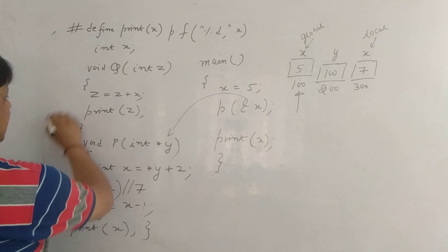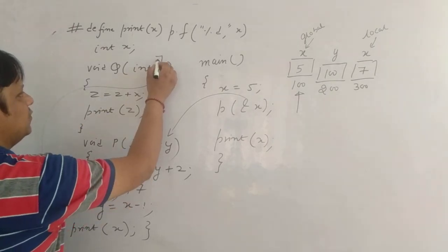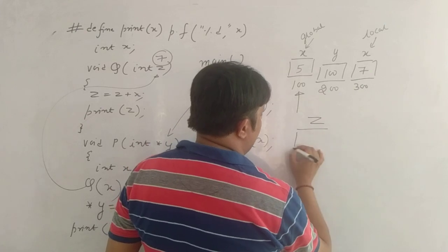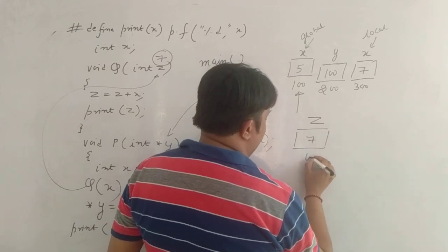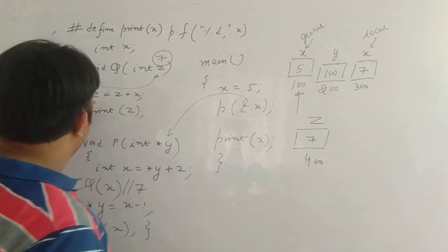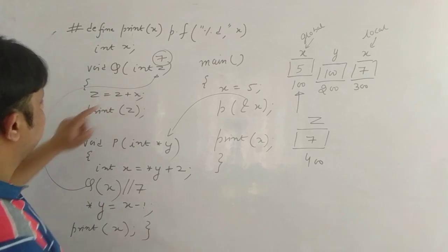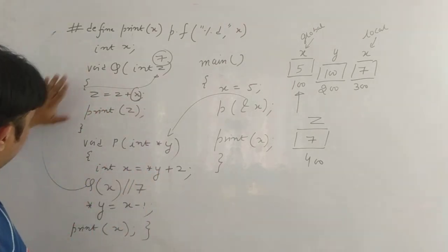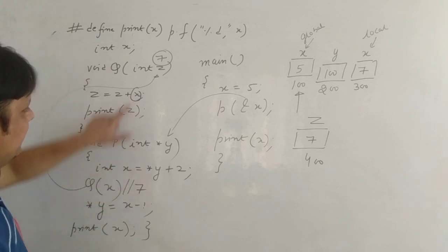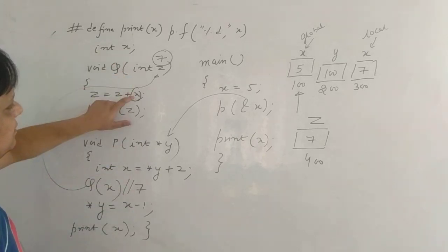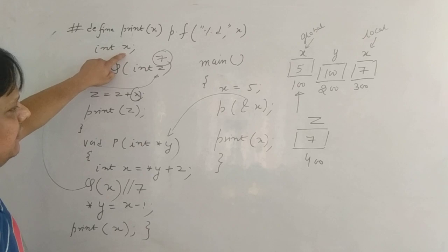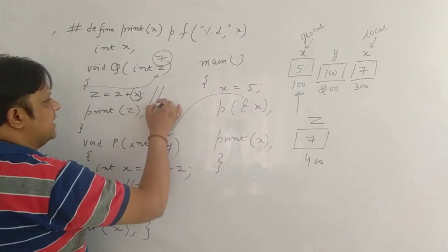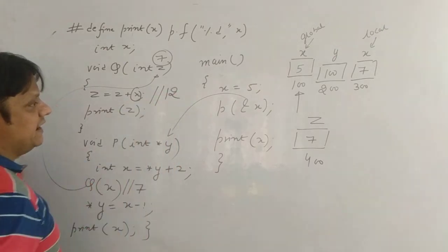And when you pass this, here the z — the value of z becomes 7. Here the value of z is 7, and let's suppose the address is 400. Now, I'm writing z is equal to z plus x, but there is no x in this function. Since this x is dead for this function, we have declared a global x. So this x is your global variable x. So value of z is 7, 7 plus x — the value of x is 5. Therefore, this z becomes 12, right?